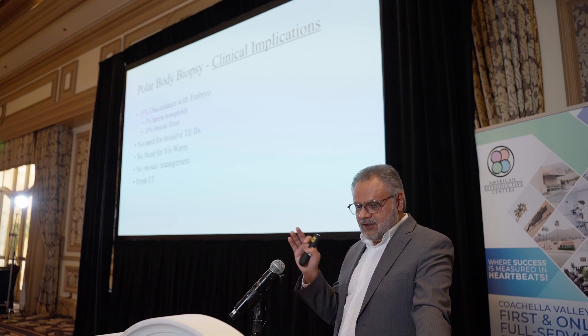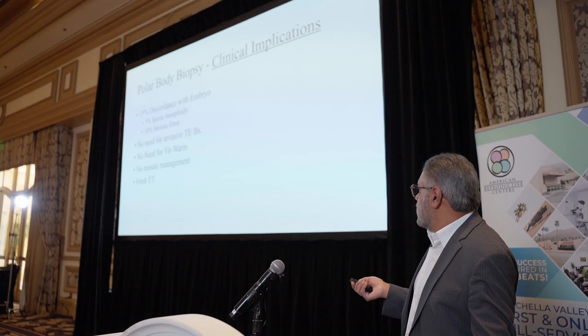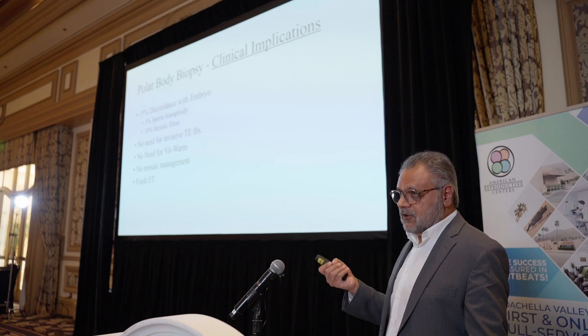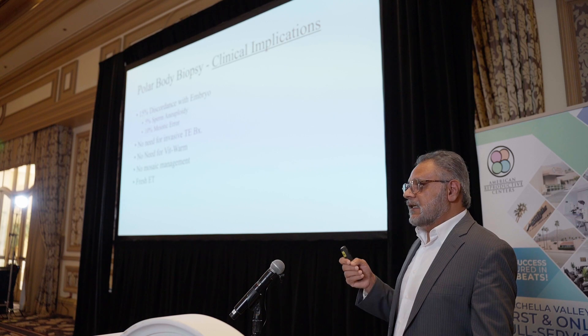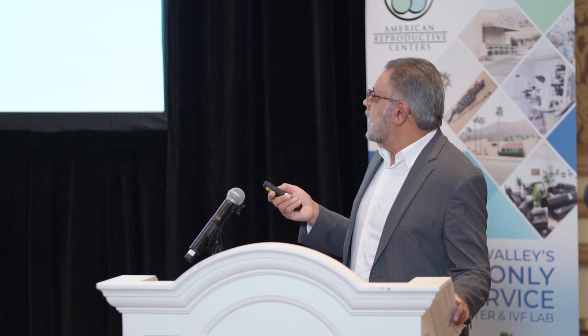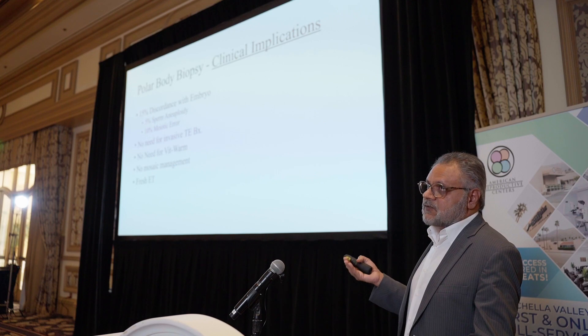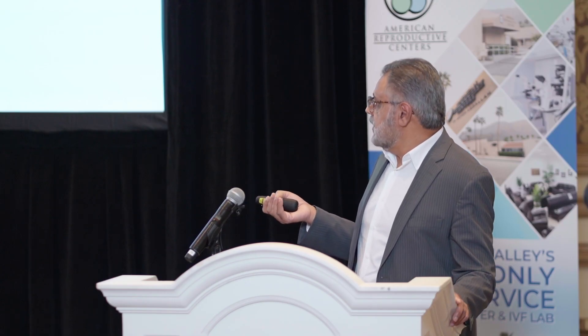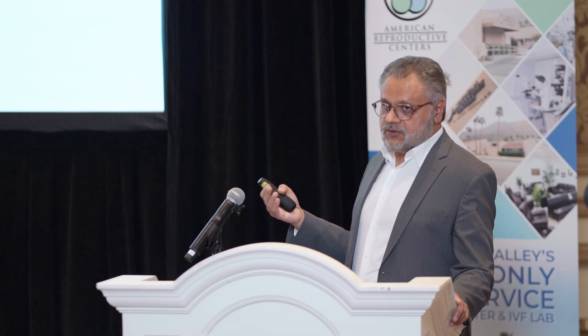There is discordance in results when we take cells from different regions — the polar body versus the trophectoderm cells. Another approach is to test the egg genetically by taking cells from the polar body even before fertilization. This is more common in some European countries due to religious beliefs or state mandates, and it is believed to be as strong as aneuploidy screening using trophectoderm cells. It is less invasive and allows a fresh transfer, but in the United States it's not very popular.